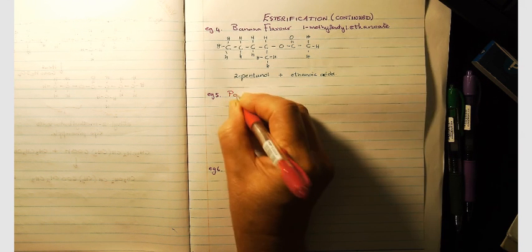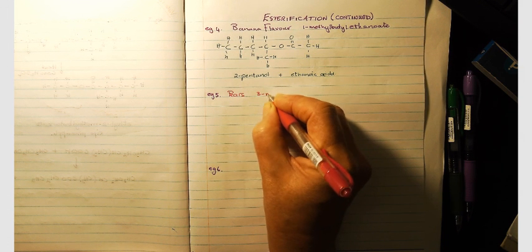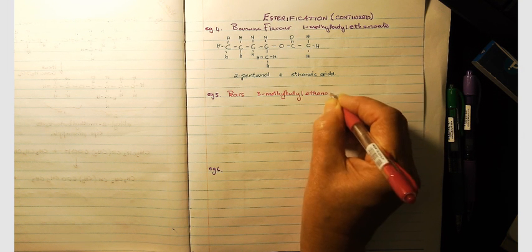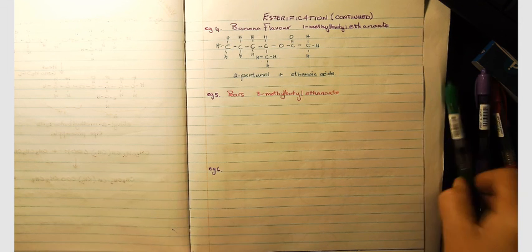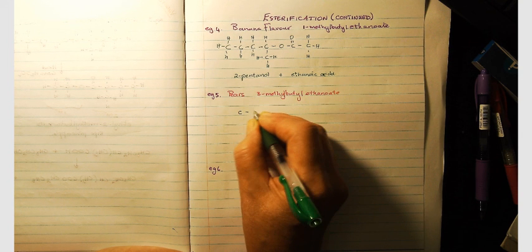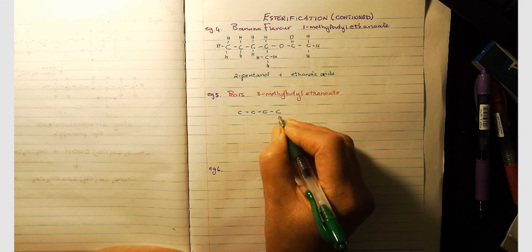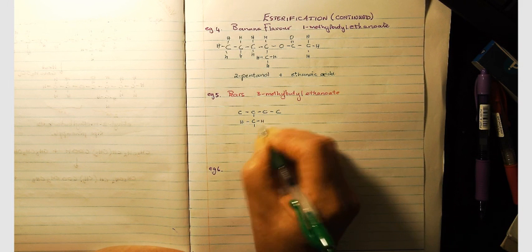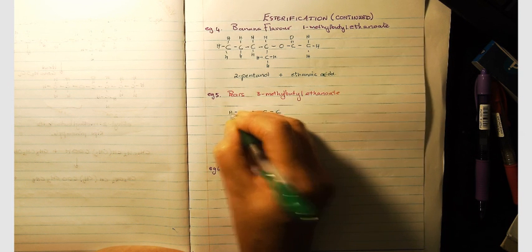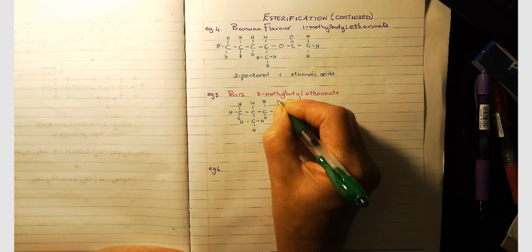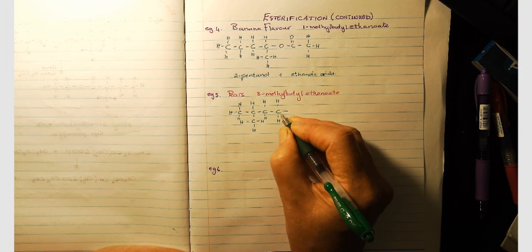Okay, the second one is the flavor of pears and this is three methyl butyl ethanoate. In three methyl butyl ethanoate, just to figure out the structural formula, you have butyl. This is where the methyl group is on the butyl - the third carbon in the chain.